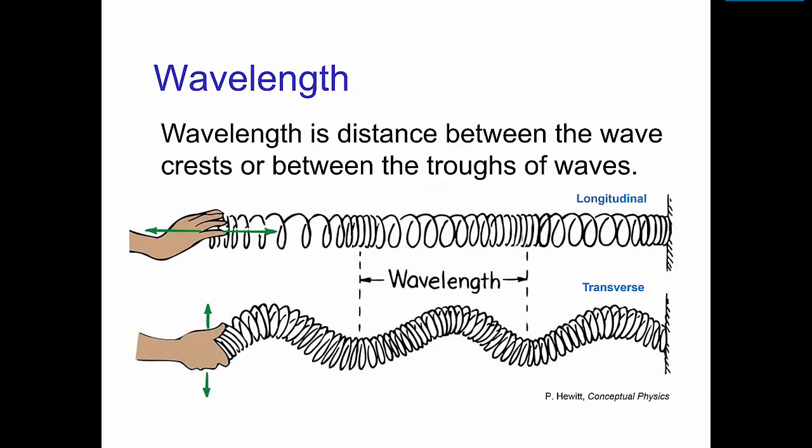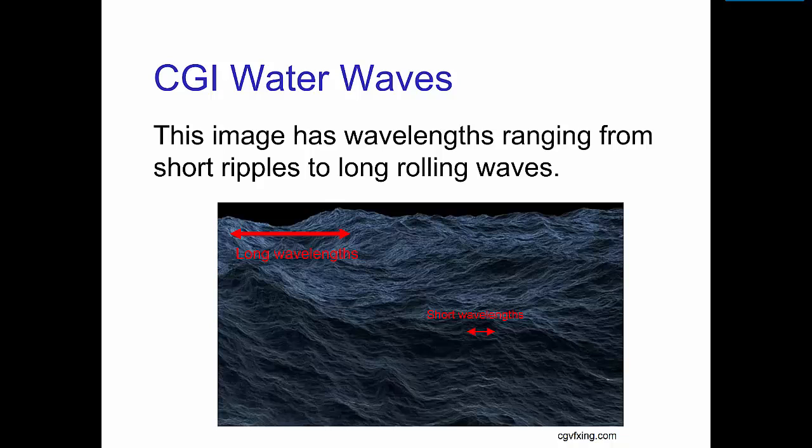The wavelength is basically just the length of the wave. It's the distance between the peaks of the waves or between the troughs of the waves. Here you see some examples for longitudinal and transverse waves. In this computer graphics image, there's various types of waves of various wavelengths. The short wavelengths are the small ripples, and the long wavelengths are the long rolling waves.